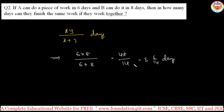You can write and simplify this further. A and B working together can finish the work in 36/14 days. You can simplify to get the final answer.